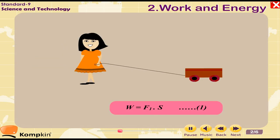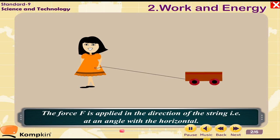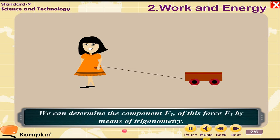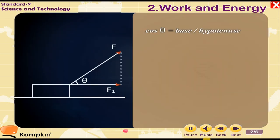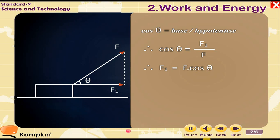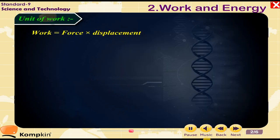The amount of work done is given by W = F1 × S (equation 1). The force is applied along the direction of the string, that is, at an angle theta with the horizontal. Using trigonometry: cos θ = base / hypotenuse, so cos θ = F1 / F, therefore F1 = F cos θ. Therefore, work done W = F cos θ × S.